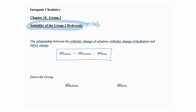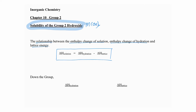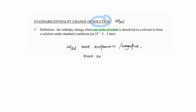Let's do a brief revision of the three terms. Enthalpy change of solution, ΔH_sl, is defined as the enthalpy change when one mole of solute is dissolved in a solvent to form a solution. If the value is more negative or more exothermic, it shows that the solute is more soluble, because more bonds are formed between the solute and the solvent, and bond forming is exothermic.